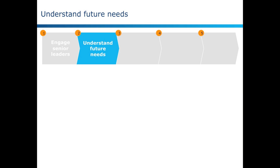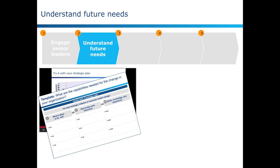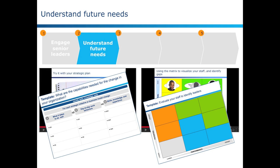Number two, understanding future needs. First, the toolkit will help you conduct a future needs assessment, where you will identify the critical knowledge, skills, and traits your leadership team will need to develop in order to live into your organization's strategic vision. Then, the toolkit will walk you through the performance potential matrix, a tool that will help you better assess your current employees to help you identify who has the potential to develop those critical skills and eventually become a leader within your organization.